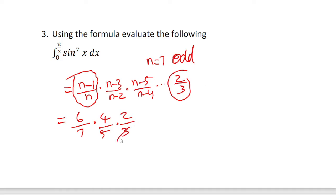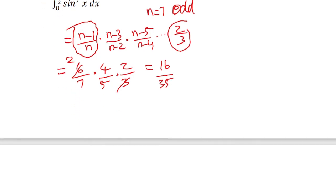After cancelling terms: numerator gives 16, denominator gives 35. So the answer using the reduction formula concept is 16/35.